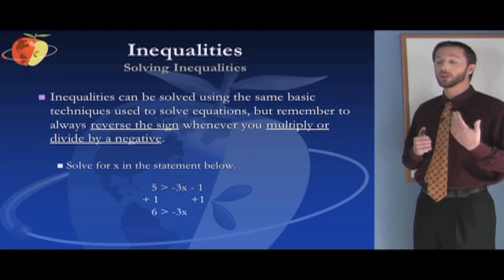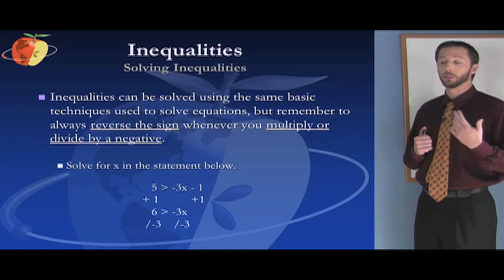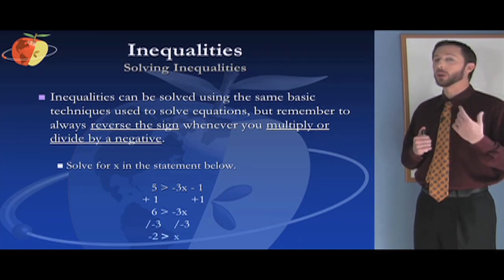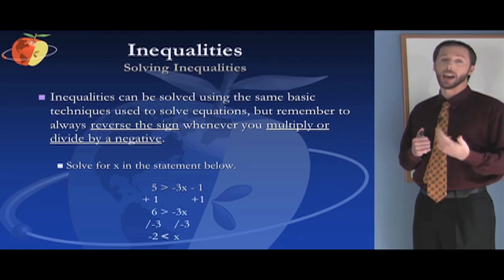So if this was a normal equation, we'd divide by negative 3. So we're going to do the same thing here with our inequality. But when we divide by a negative or multiply as the case may be, we have to switch the sign. So we divide by negative 3 and then we take that sign and we turn it around. So now we have negative 2 is less than x.